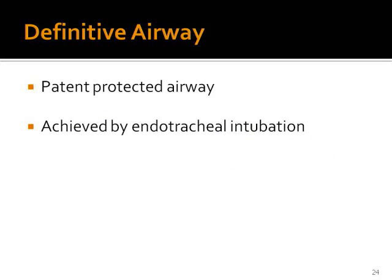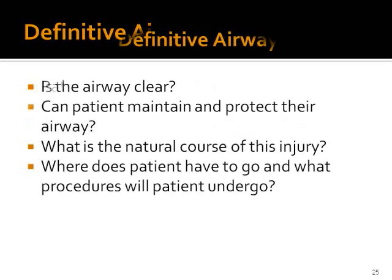Patients with a compromised airway or breathing need a patent, protected airway established by endotracheal intubation. The definitive airway is established in the following situations: when the airway is not clear; when the patient cannot be trusted to maintain or protect their airway, such as intoxicated or unconscious patients; when the natural course of injury can result in airway compromise, for example a neck injury with an expanding hematoma or facial burns; and when the patient requires investigations and the airway needs to be protected from the outset.